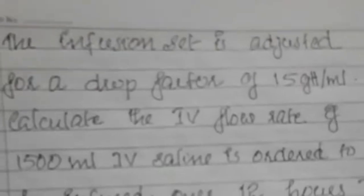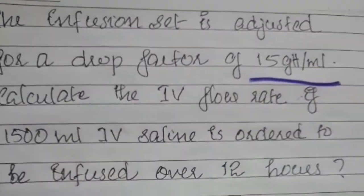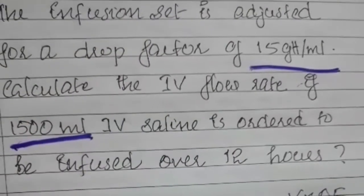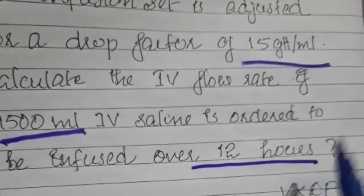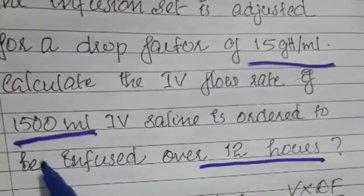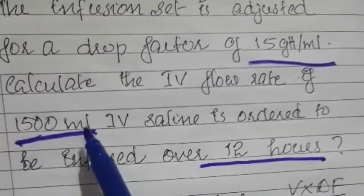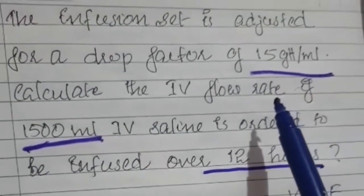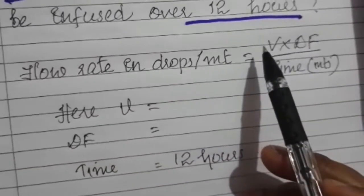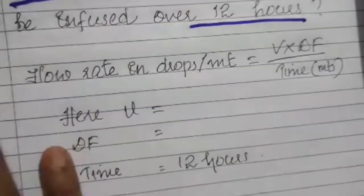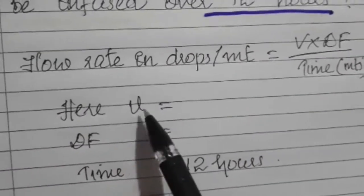Here is another example: the infusion set is adjusted for a drop factor of 15 gtt per mL (15 drops per mL). Calculate the IV flow rate if 1500 mL IV saline is ordered to be infused over 12 hours. Drop factor is 15 drops per mL, total volume is 1500 mL, and time is 12 hours. We need to calculate the IV flow rate in drops per minute, so we write the formula: flow rate = volume × drop factor ÷ time in minutes.